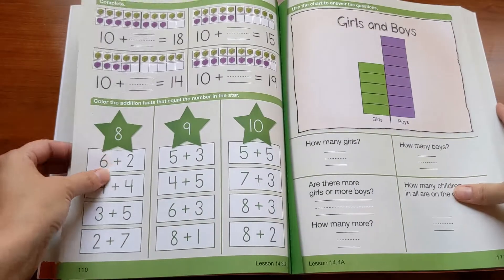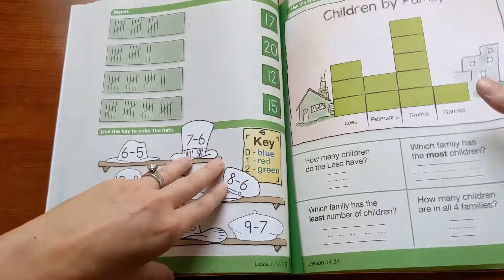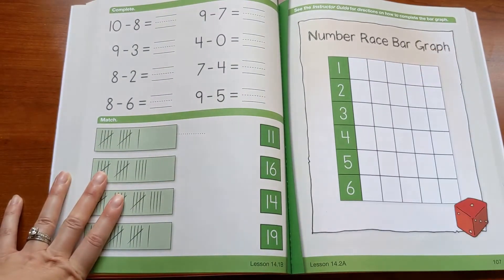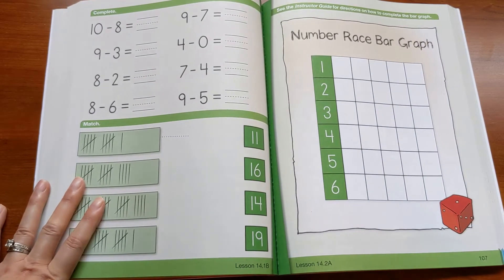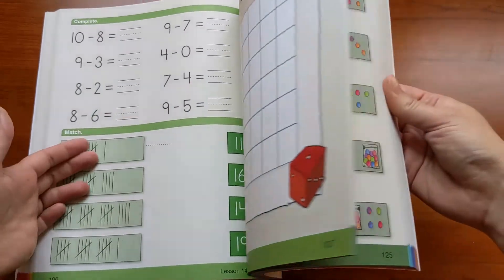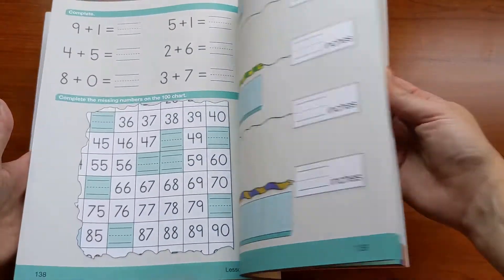And then occasionally you'll use this. So for example, here in the bar graph lesson, you actually use this in the lesson to record when you throw a die and make a bar graph. But for the most part, these are completed independently after you finish the main part of the lesson.